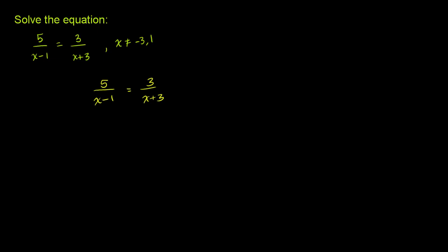Well, a good place to start, if we don't want this x plus 3 in the denominator right here, we can multiply both sides of this equation by x plus 3. Anything you do to one side, you have to do to the other. Now, by the same argument, I don't like having this x minus 1 here. So let's multiply both sides of the equation by x minus 1.